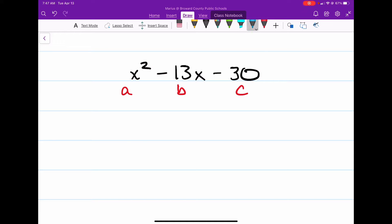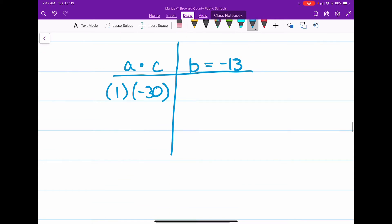And then we're going to do the a times c method. And we need to know which factors of a times c equals to b. b is negative 13. a times c would be 1 times negative 30. When we multiply those, we get negative 30.